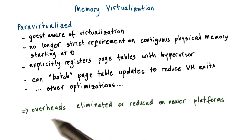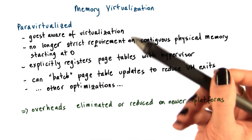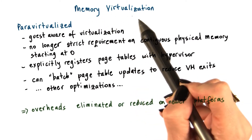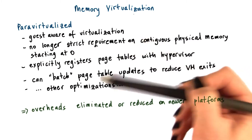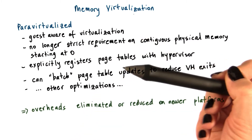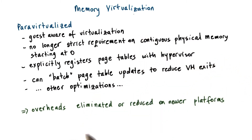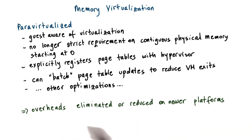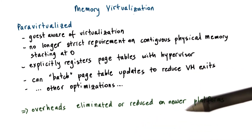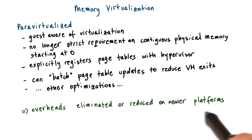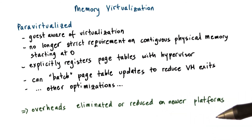The two mechanisms described for memory virtualization, for both full as well as para-virtualized VMs, have substantially been improved given advances in new hardware architecture. Some of these overheads have been completely eliminated, or at least substantially reduced, if we look at the newer generation of x86 platforms. We will talk about that shortly in this lesson.